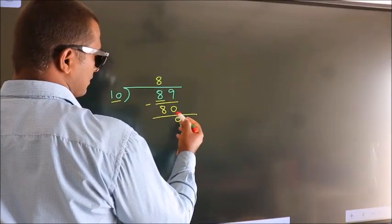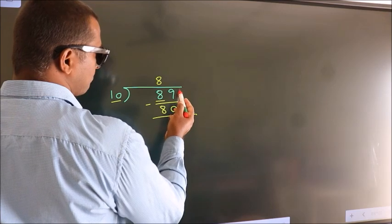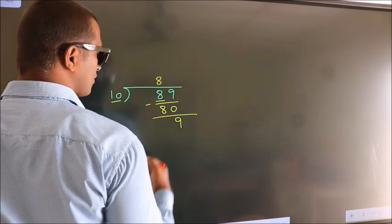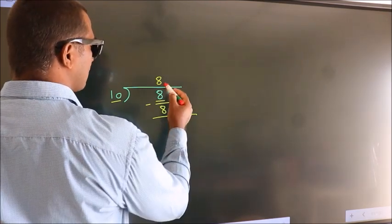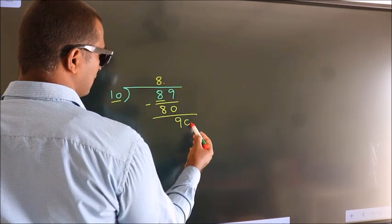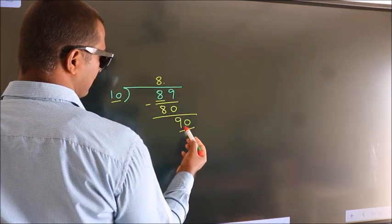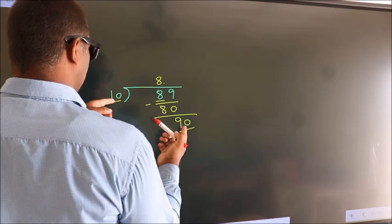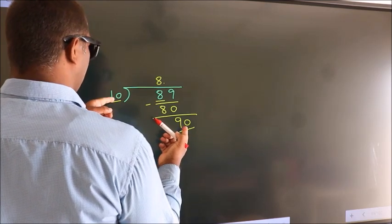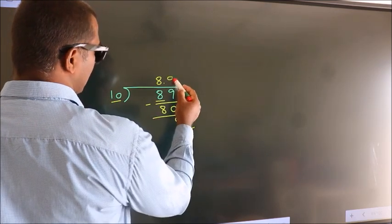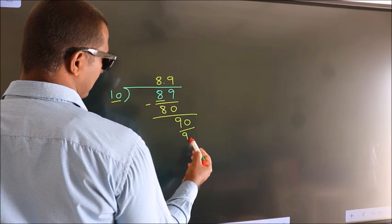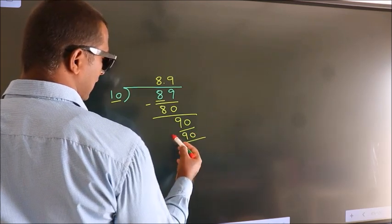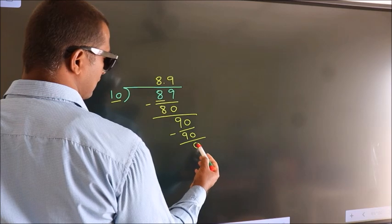After this, there are no more numbers to bring down. So what we do is put a dot and take 0, making it 90. When do we get 90 in the 10 times table? 10 nines are 90. Now we subtract and we get 0.